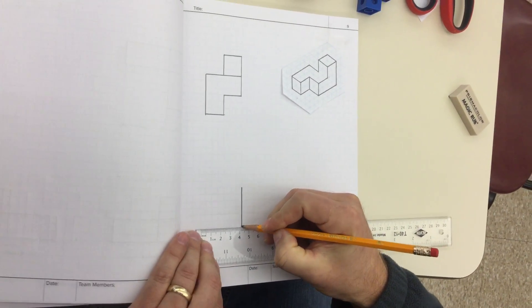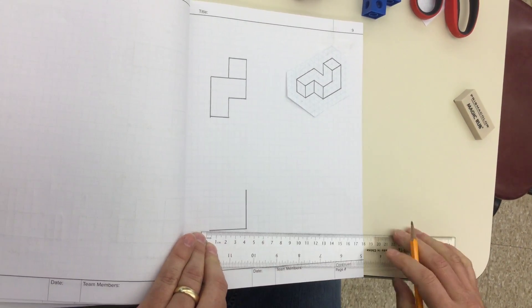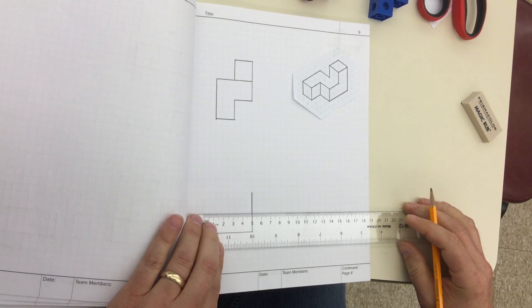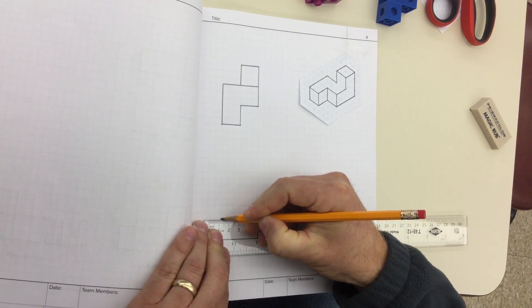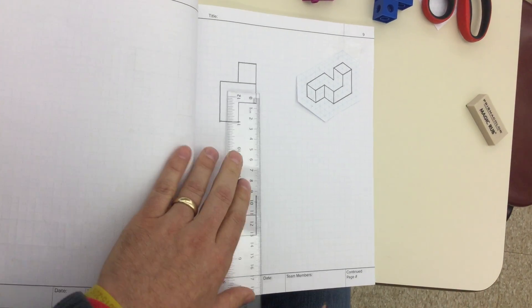Each square on the graph paper is a quarter inch. And we're drawing our line straight through because it's showing different planes.